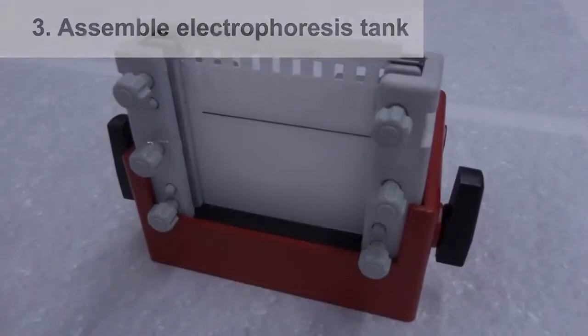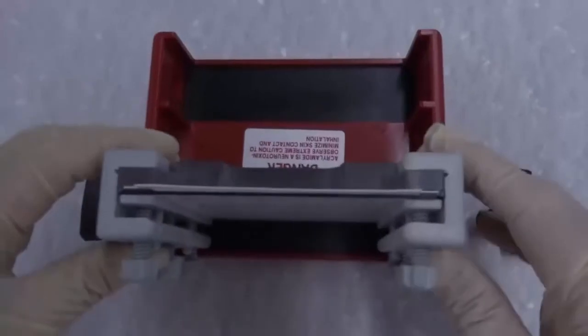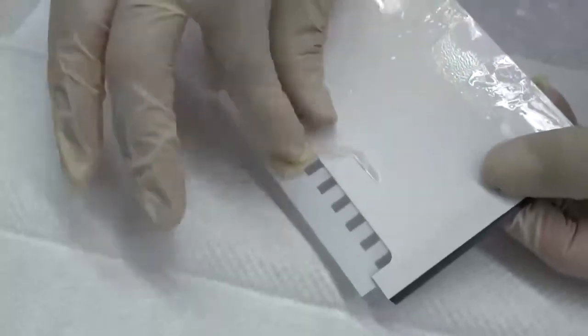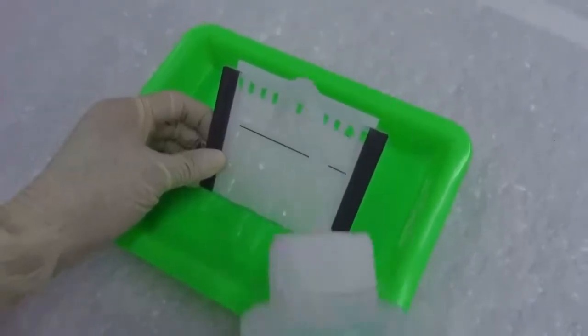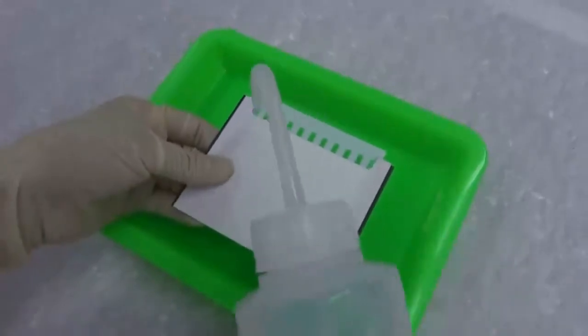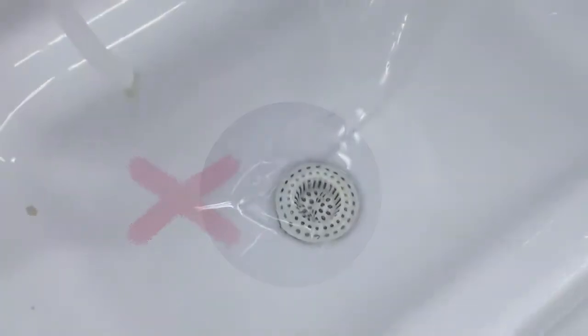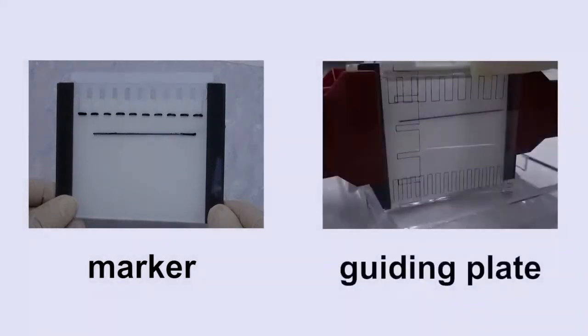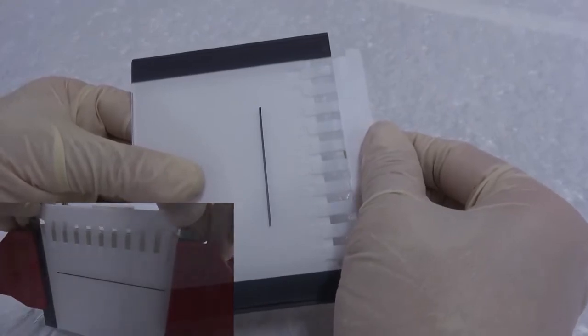Once the gel is cast successfully, twist the black knobs downward and pull them out. Push out the cassette sandwich from the bottom, remove the residual gel from both sides by hand or using a plastic card, and then rinse both sides with distilled water. To avoid clog, do not drop residual gel into the sink. You may use a marker to label and number the sample wells or use a guiding plate later.